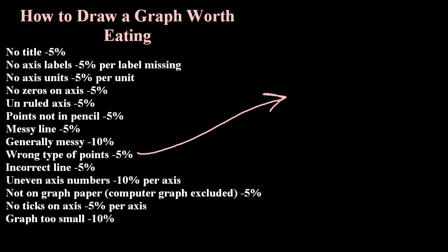Wrong type of points. Again, I'm fussy about this, but I don't think the IB worries that much if you decide to go with big blobs or triangles or squares. But crosses, circles, and dots, I think, are better.